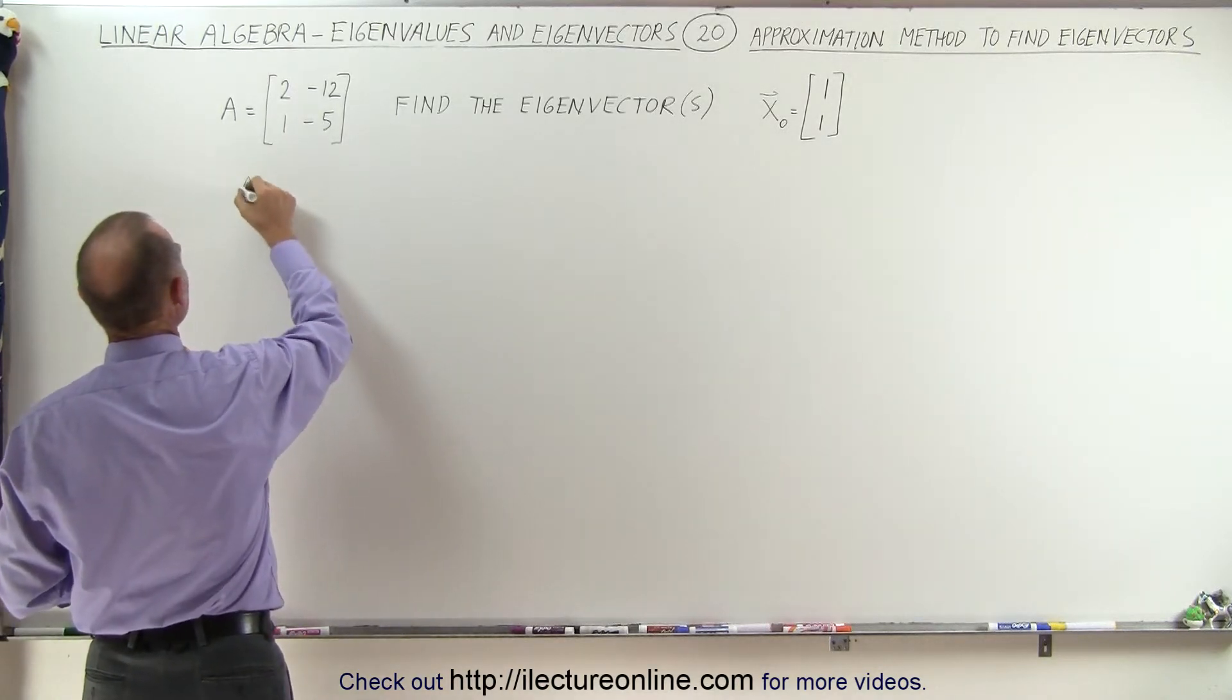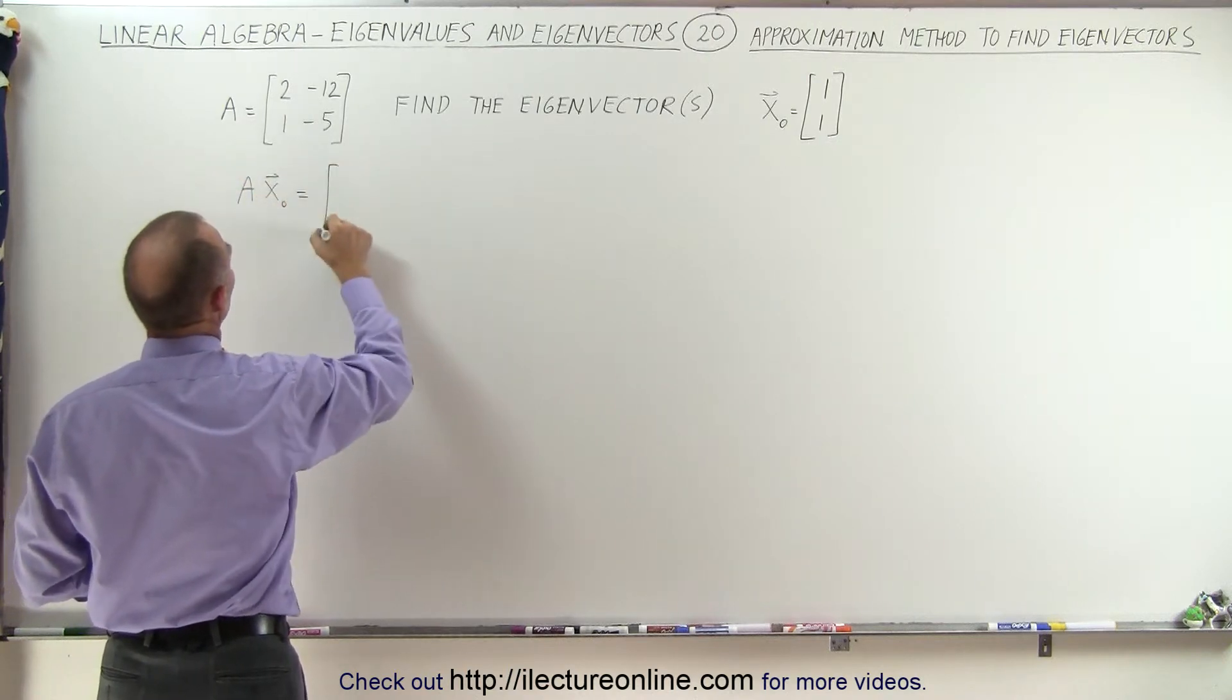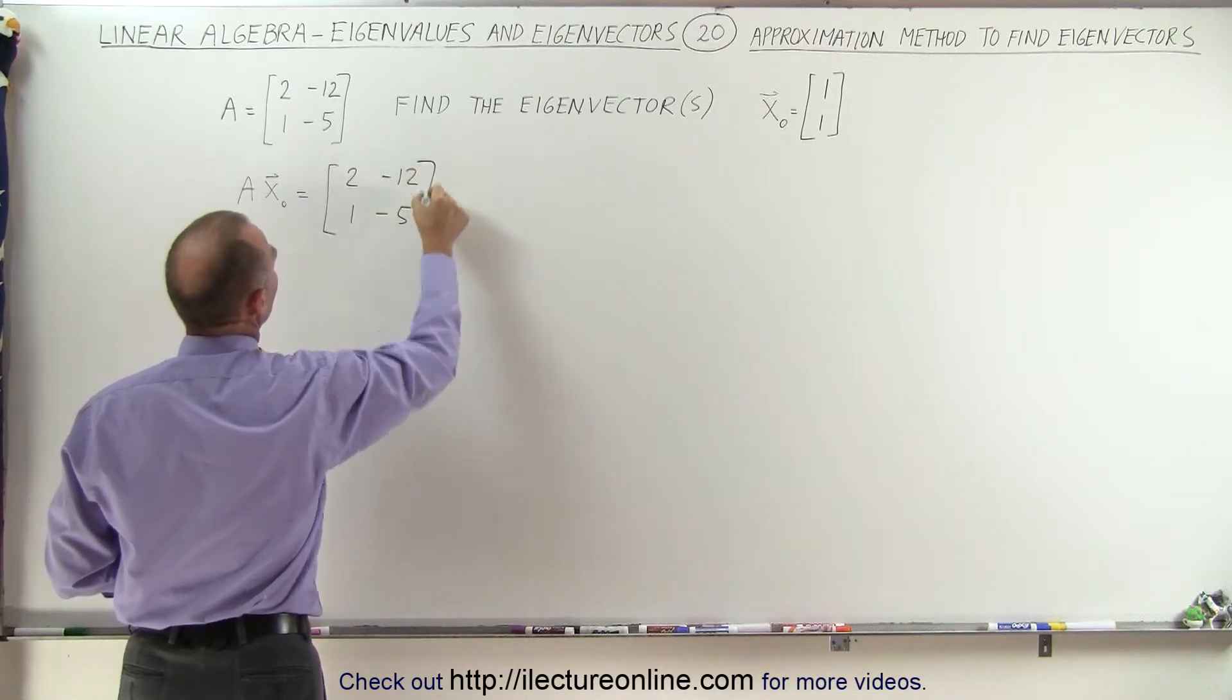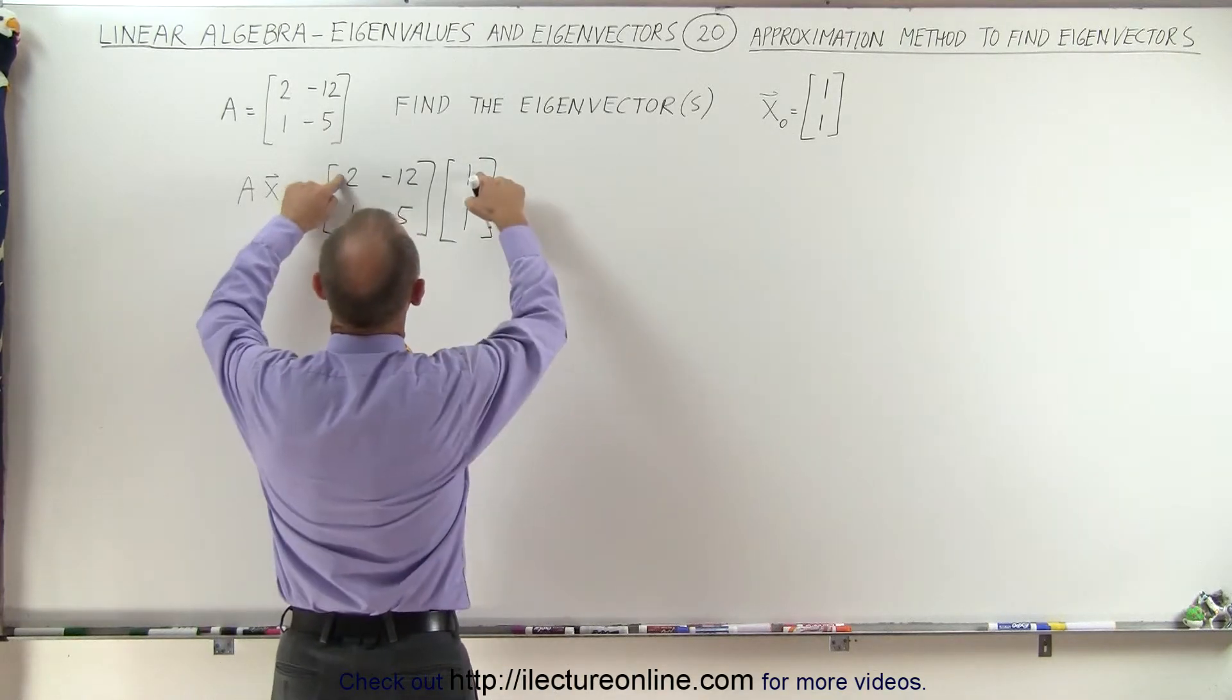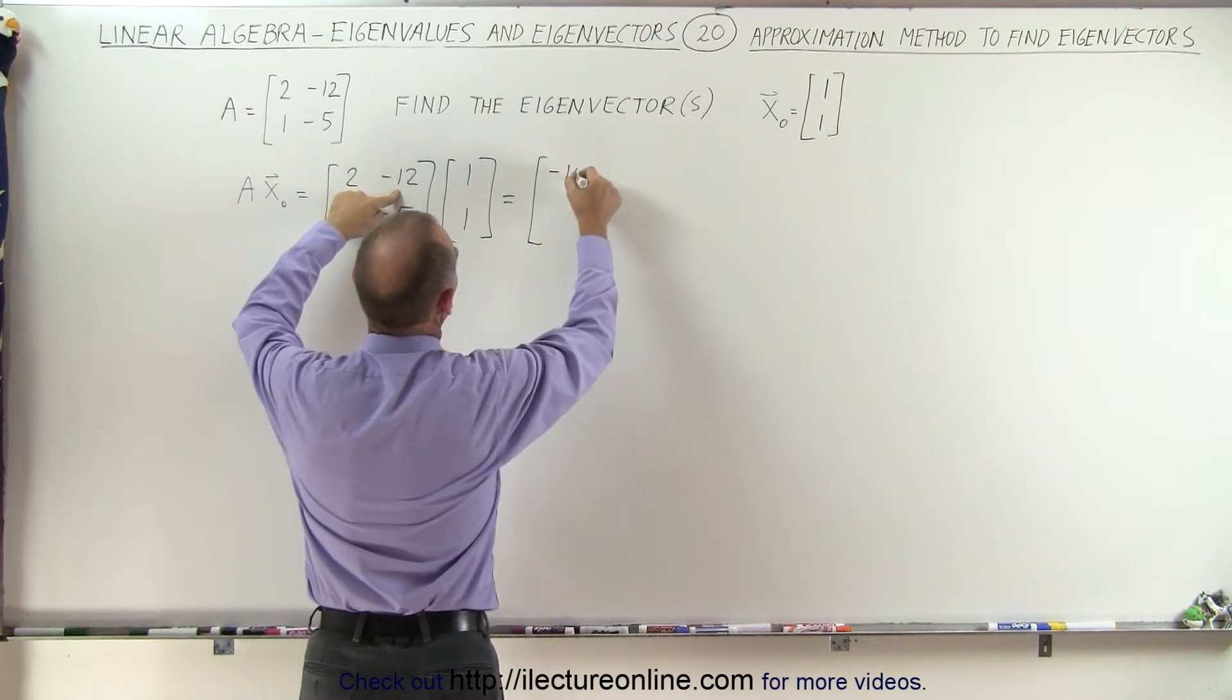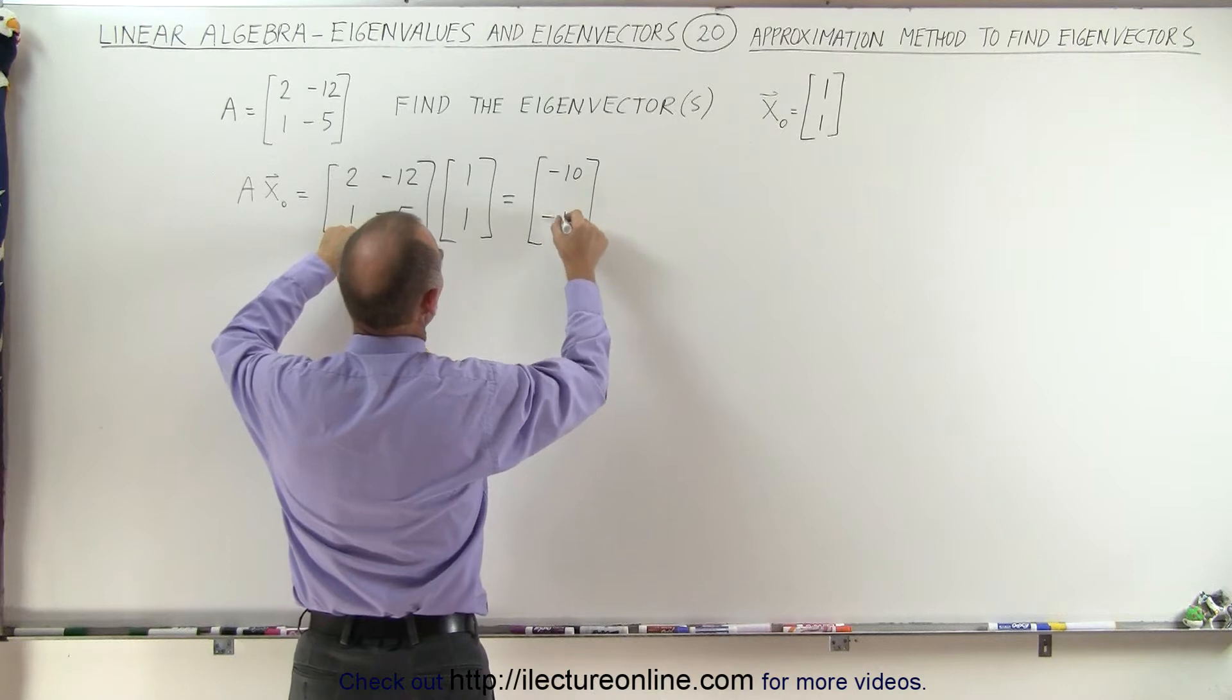So we're going to multiply A times the vector x sub naught. So this is [2, -12; 1, -5] and multiply that times [1, 1]. And let's see what we end up with. So this is 2 minus 12, that's minus 10. And here we get 1 minus 5, which is minus 4.